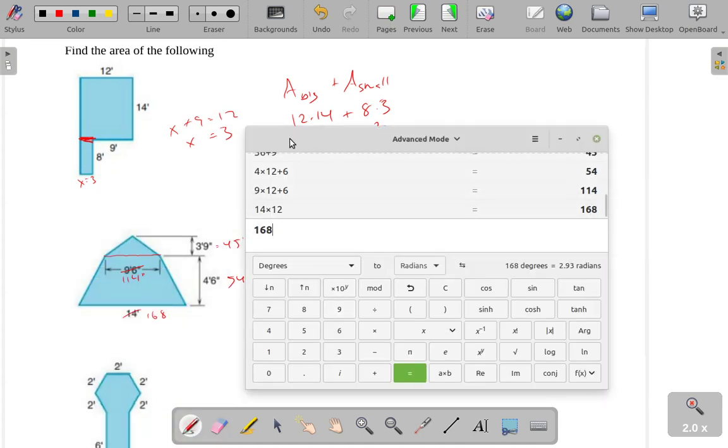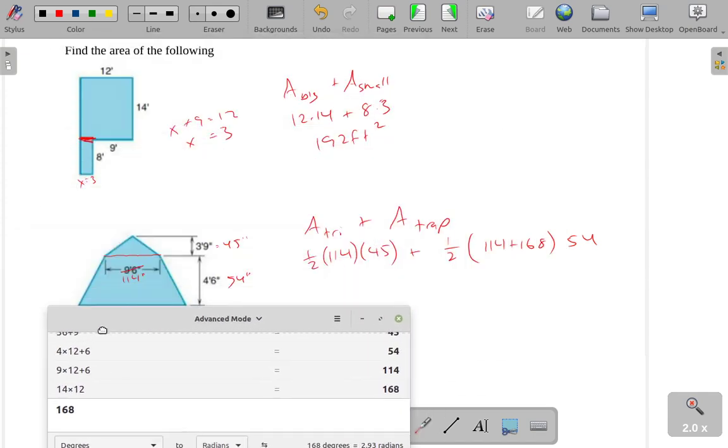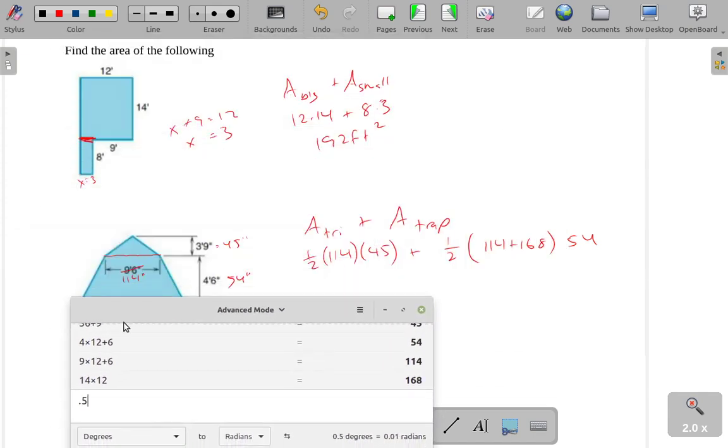You can see I'm using all sorts of different formulas. If you don't have your formula sheet handy, you should probably be consulting that. We end up with a total area here of 10,179 square inches.